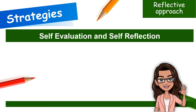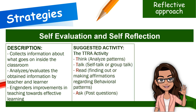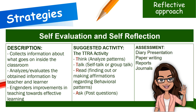Self-evaluation and self-reflection collects information about what goes on inside the classroom. It analyzes and evaluates the obtained information by teacher and learner and engenders improvements in teaching towards effective learning. This strategy makes use of the TTRA activity: Think, analyze patterns occurring during the teaching and learning process; Talk, self-talk or group talk done by the teacher or learner as a source of reflection; Read, finding out or making affirmations regarding behavioral patterns; and Ask, post questions to get ideas or opportunities on an area that interests you to improve or develop. Assessments may be through diary presentation, paper writing, reports, and journals.